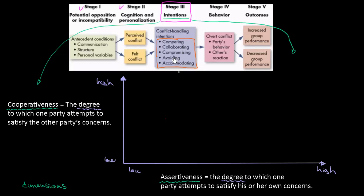The first one that comes to mind is the simplest one: avoiding. When you are avoiding a conflict, you are trying to withdraw, to go away from it. In that scenario you are not really cooperative and not really assertive — you are not trying to satisfy the other party's concern, and you are also not trying to satisfy your own concerns. You are just avoiding the conflict, so we can place avoiding right over here.